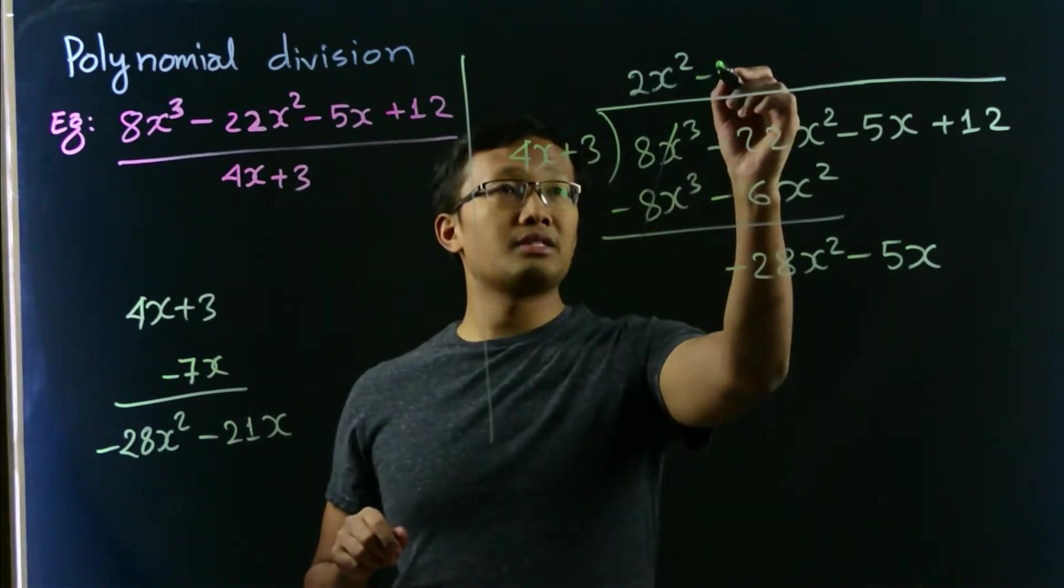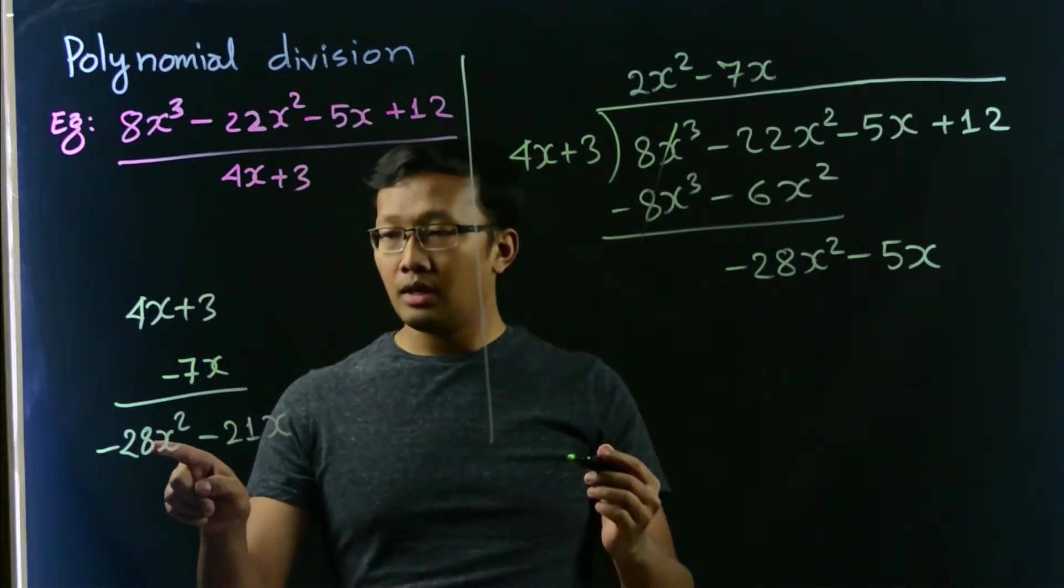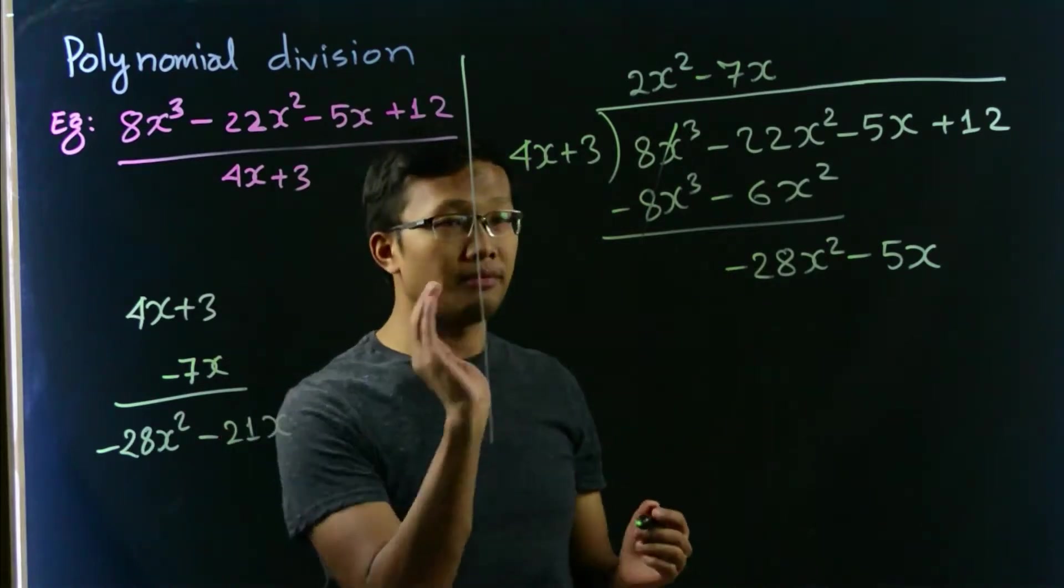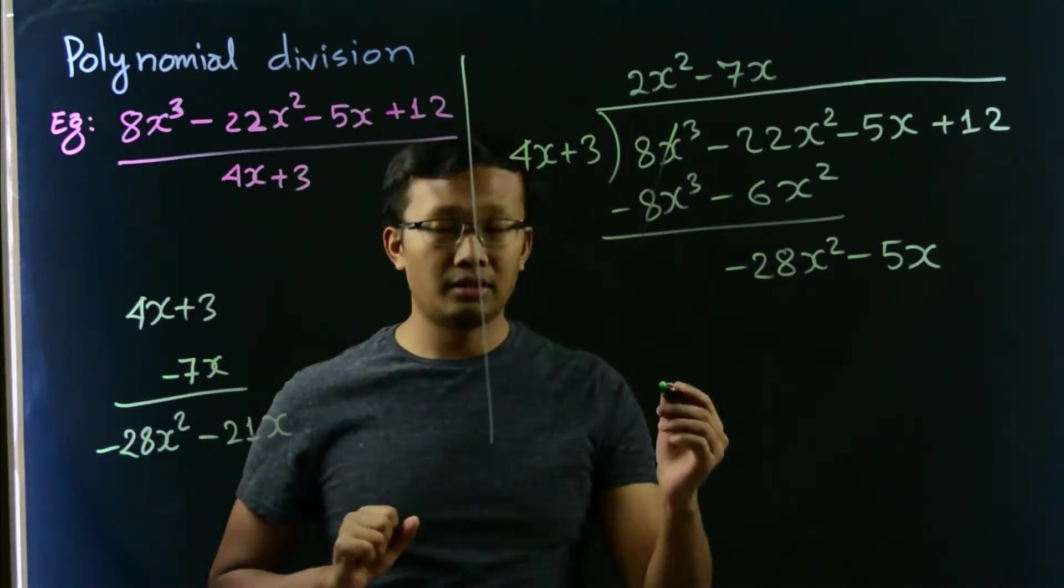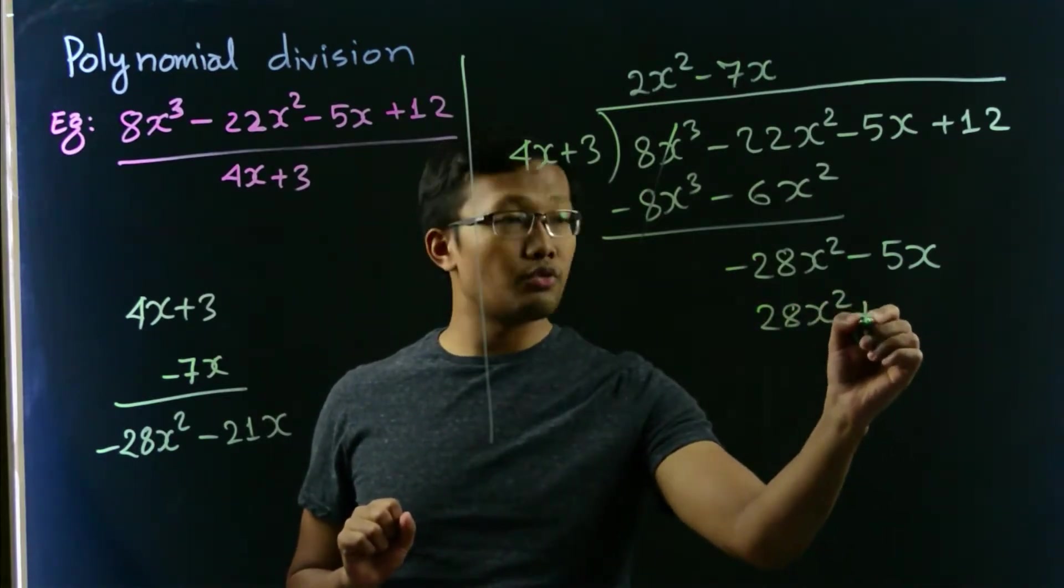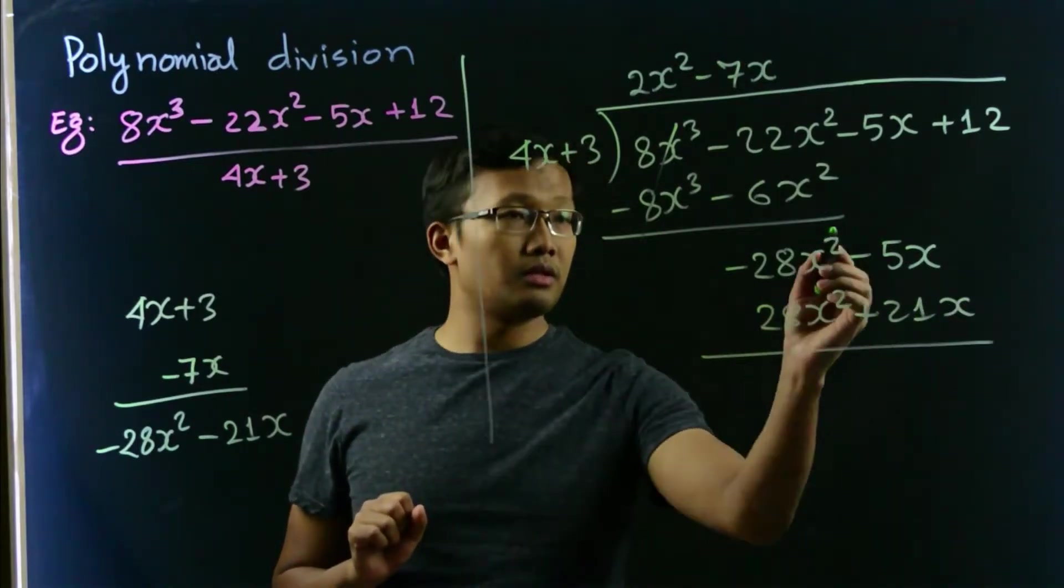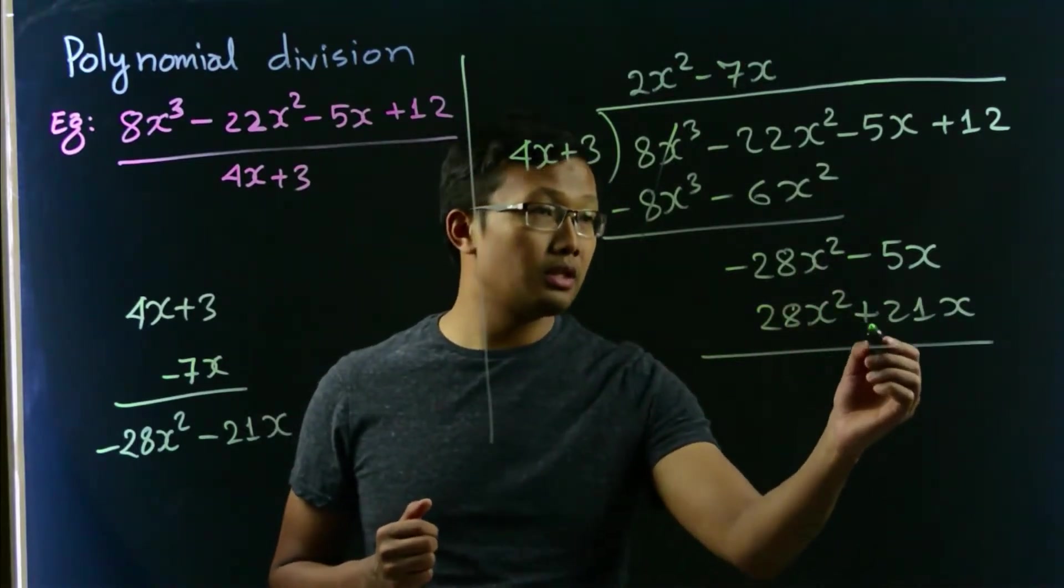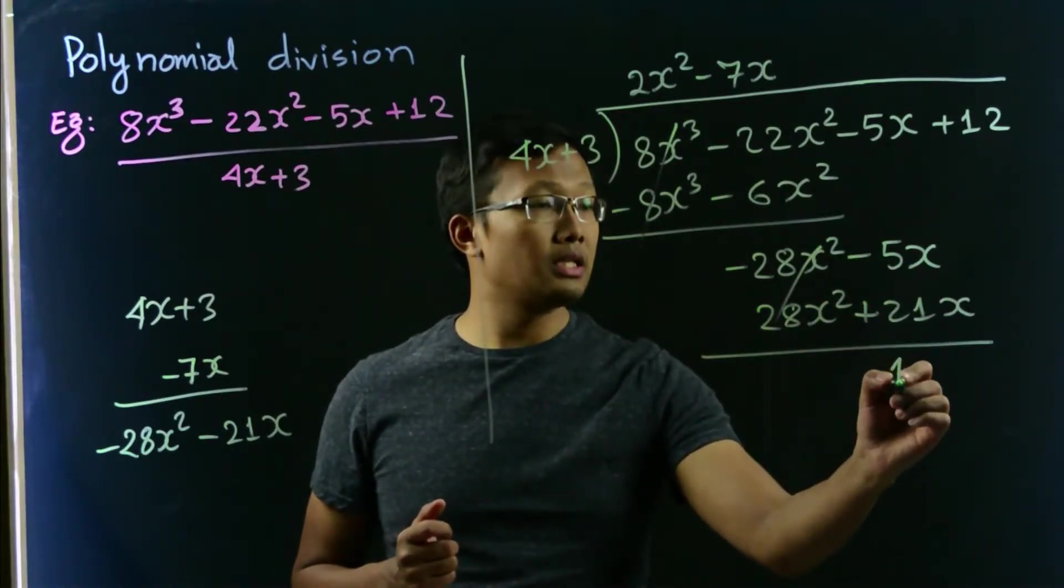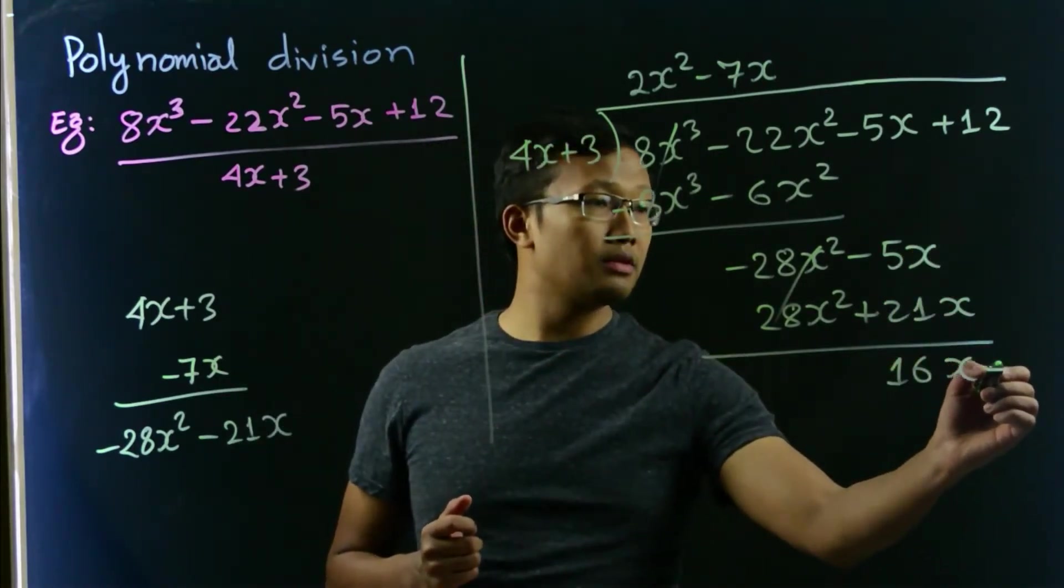So that's negative 7x, and let us change the sign of both of these two expressions whenever we are taking this and writing here. So that would be positive 28x squared plus 21x. So negative 28 and positive 28x squared cancels out. 21 minus 5 is 16x, and let's bring this 12 down, so that's 12.